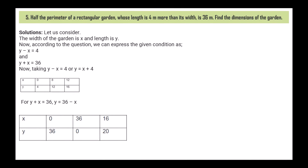Next, question 5: half the perimeter of a rectangular garden, whose length is 4 metres more than its width, is 36 metres. Find the dimensions of the garden. Let the width be x and the length be y. According to the question: y - x = 4 and y + x = 36. For y - x = 4, y = x + 4: if x = 0, y = 4; x = 8, y = 12; x = 12, y = 16. For x + y = 36, y = 36 - x: if x = 0, y = 36; x = 36, y = 0; x = 16, y = 20.